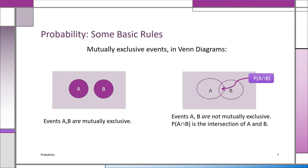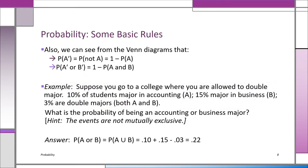A Venn diagram is an easy way to describe mutually exclusive versus non-mutually exclusive events. On the left, A and B are not intersecting — they're separate, so A and B are mutually exclusive. On the right, A and B are not mutually exclusive because where they intersect, the probability of A and B is not zero — there's an overlap called the intersection. From the Venn diagrams you can see that P(not A) = 1 − P(A), and P(not A or not B) = 1 − P(A and B).